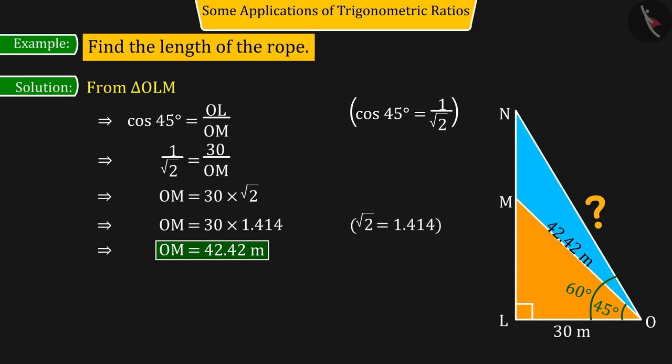So we can say that the length of the rope from point O to M will be 42.42 meters.